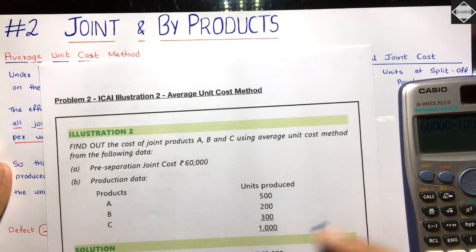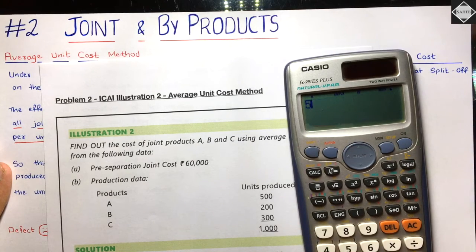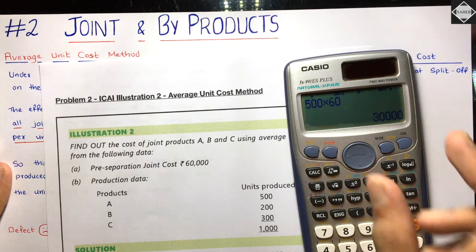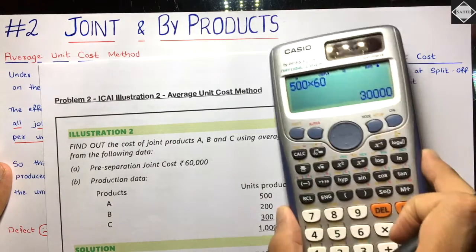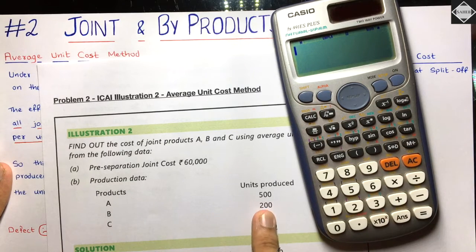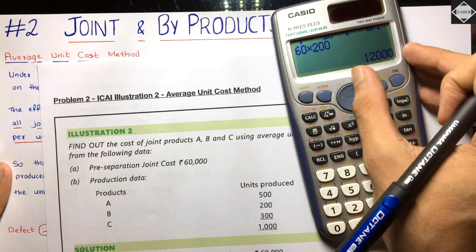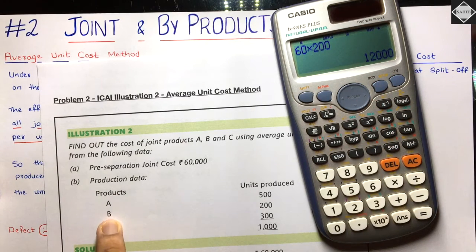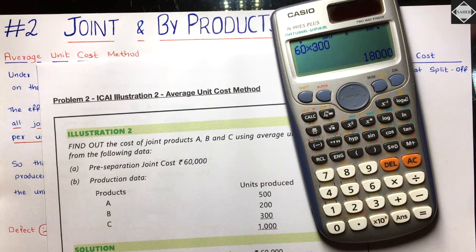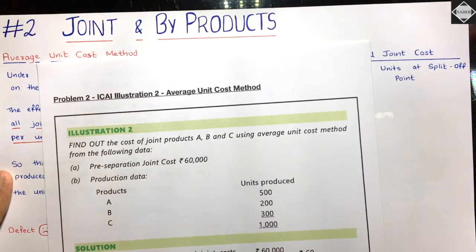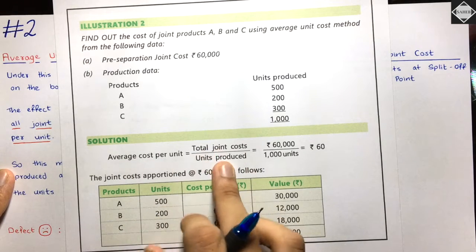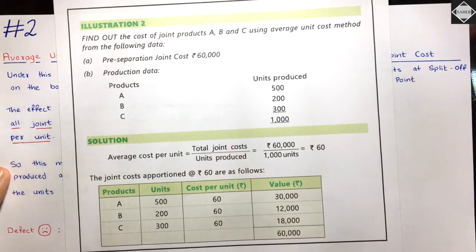With an average cost per unit of 60, we allocate to each product: Product A = 500 × 60 = 30,000. Product B = 200 × 60 = 12,000. Product C = 300 × 60 = 18,000. The joint cost is apportioned to each product by multiplying the average cost per unit by the number of units produced.